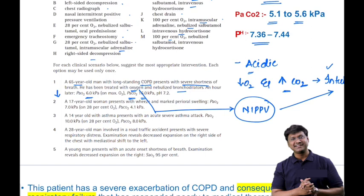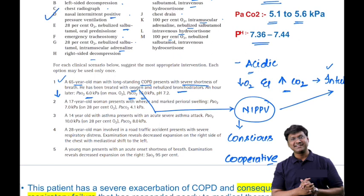An important precaution for NIV: the individual must be completely conscious and cooperative. In the given clinical scenario, there is no mention that the individual is drowsy or non-cooperative. The patient is already on nebulized bronchodilators, so giving nebulized salbutamol again will be of no use. The best intervention is nasal intermittent positive pressure ventilation, and if this fails, then intubation.